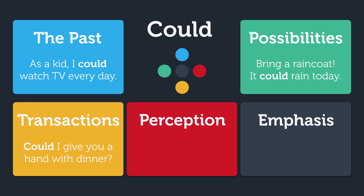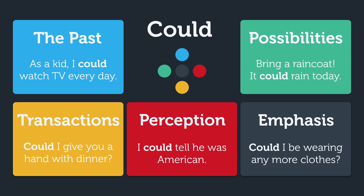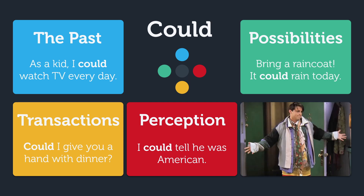Perception is how we sense the world or things about other people. For example: I could tell he was American. Finally, 'could' often gives us the ability to highlight how we're feeling about a situation. You might recognize the sentence 'could I be wearing any more clothes?' from a famous episode of the TV show Friends.